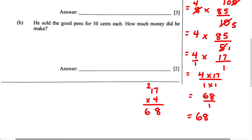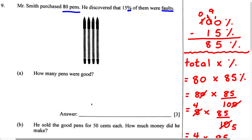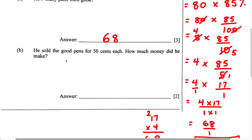Therefore, the number of pens that are good is 68 good pens. This is our answer for Part A. Out of 80 pens that Mr. Smith purchased, 68 of them are good. Now for Part B, it says he sold the good pens for 50 cents each. How much money did he make? We're going to multiply the number of good pens by the price of one good pen, which is 50 cents.